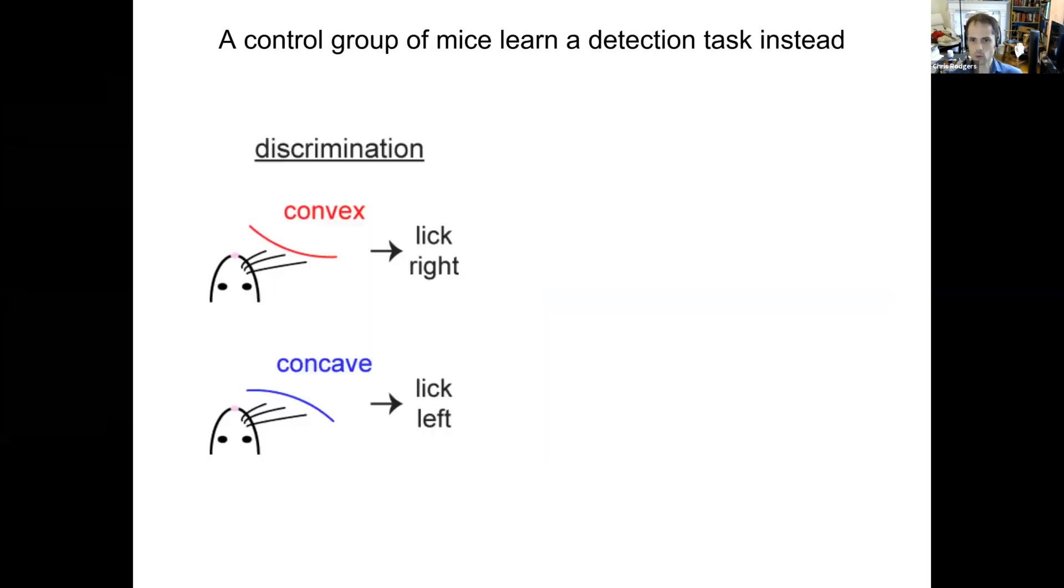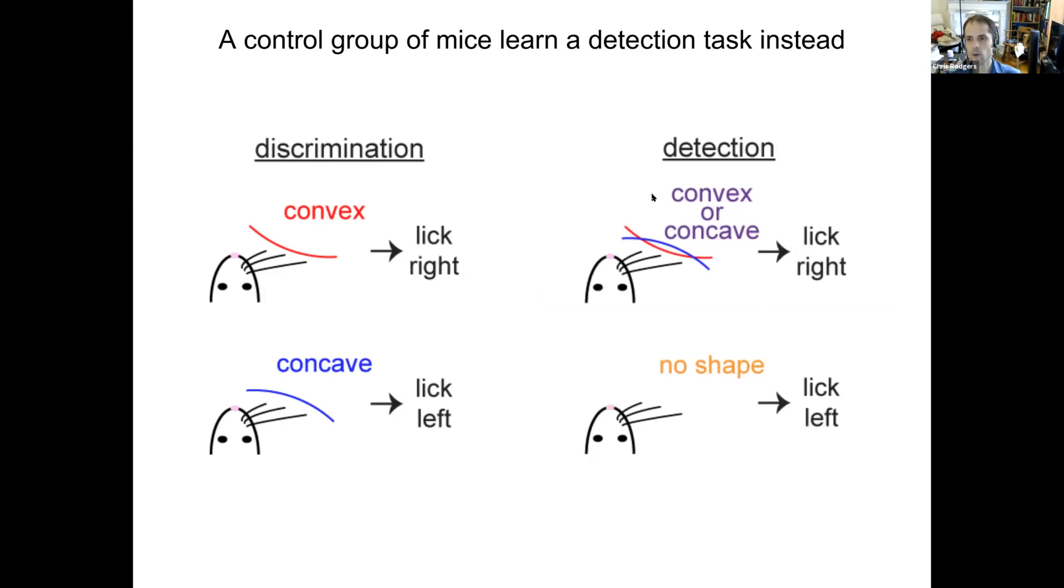And so these are the rules that the mouse has to learn. He needs to learn to lick right for convex shapes and to lick left for concave shapes. But I also trained a control group of mice to learn a different task. This is called the shape detection task, as opposed to shape discrimination. During detection, the shapes are the same and the positions and the timing of everything is the same, but the rule is different. These mice have to learn to lick right if either shape is presented, convex or concave, and to lick left on control trials where no shape is presented. So having these two tasks is going to allow me to identify whether the behavioral and neural effects that I see are just due to the shapes, or whether they have to do with the task that the mouse is trying to perform on those shapes.